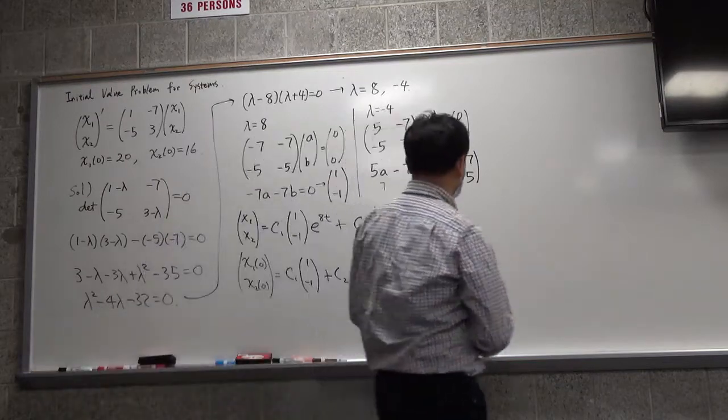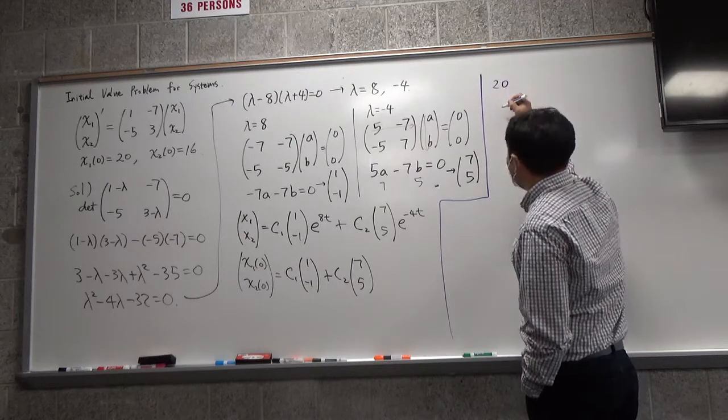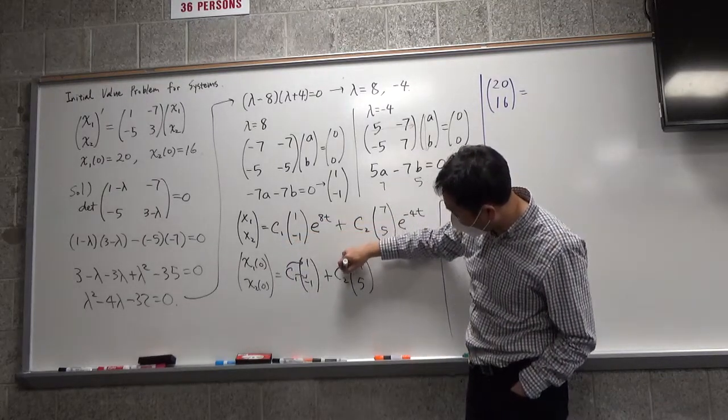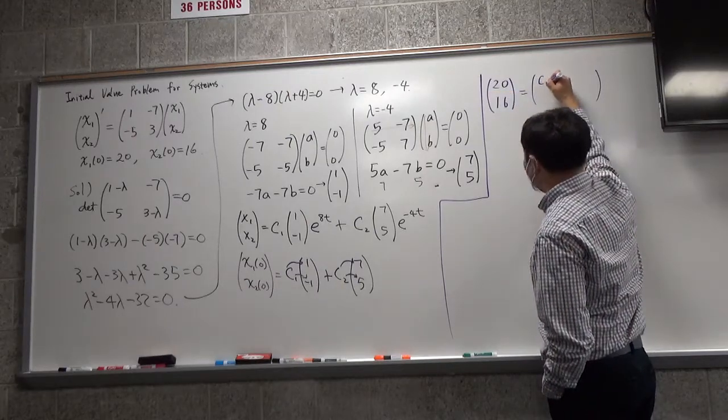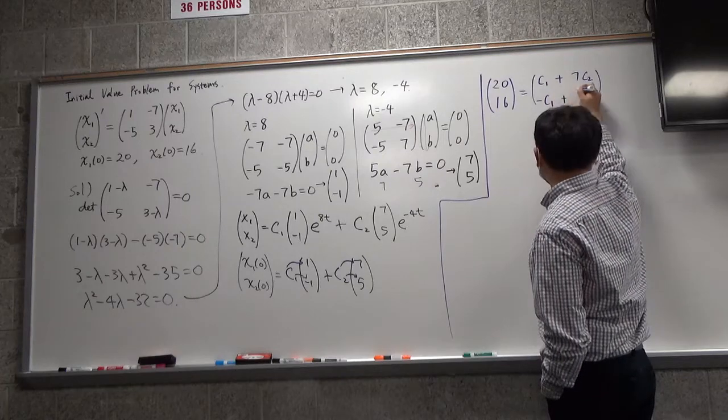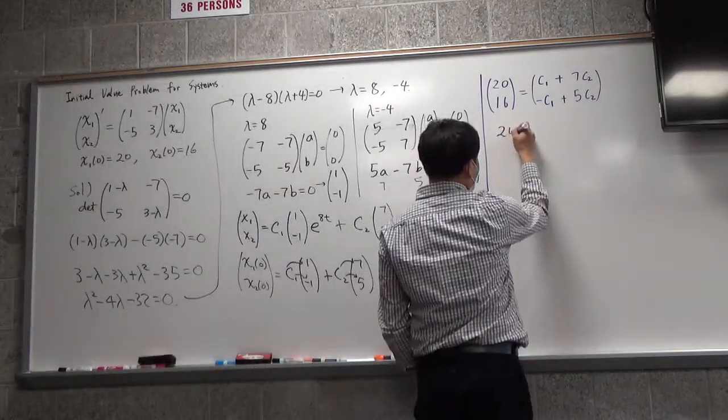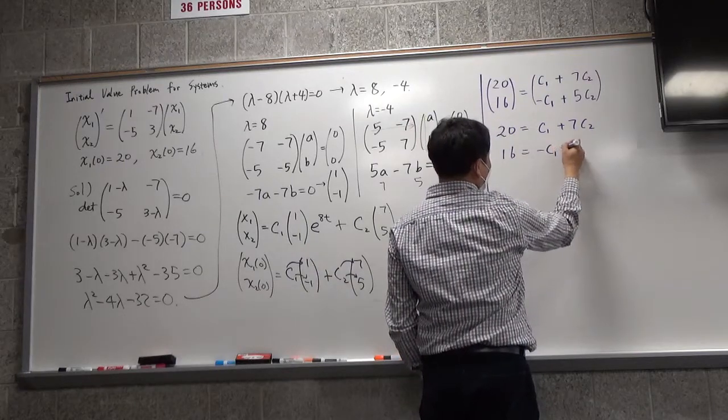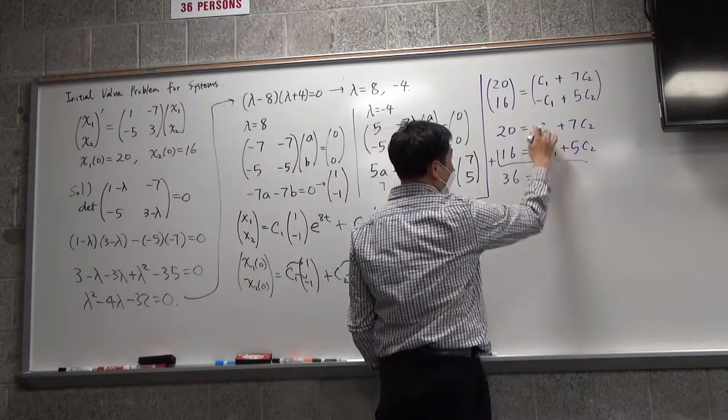So let's write down what that means. X1, 0 is 20, X2, 0 is 16. Now if I multiply C1 to this, and C1 to negative 1, and C2 to this, and C2 to 5, and combine them together, what do I get on the top? C1 times 1 plus 7C2, and the bottom, that's negative C1 plus 5C2. And that just gives you a system of equations which you can solve. And this one, I made it so that it will be easy to solve. What's the easiest way to solve this? Add them, right? Add them, that's 36. These cancel, and you have 12C2. So C2 would be 3.